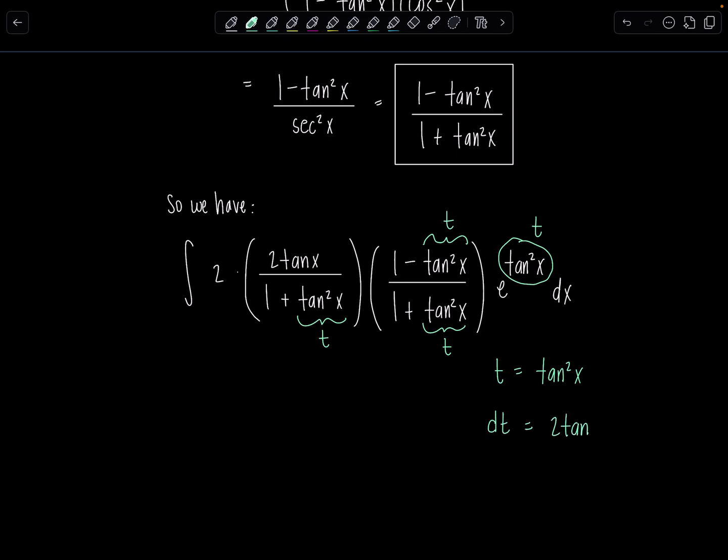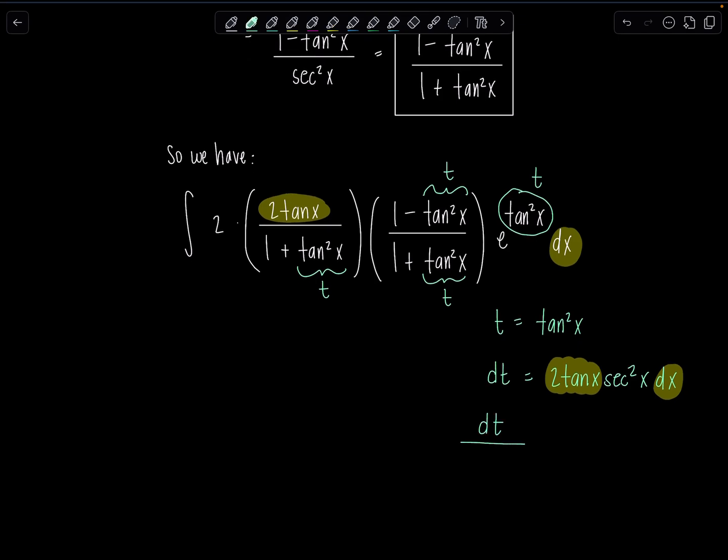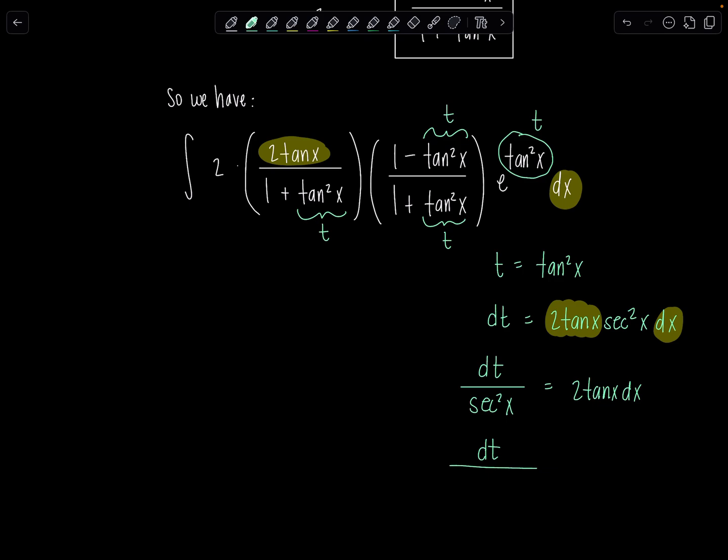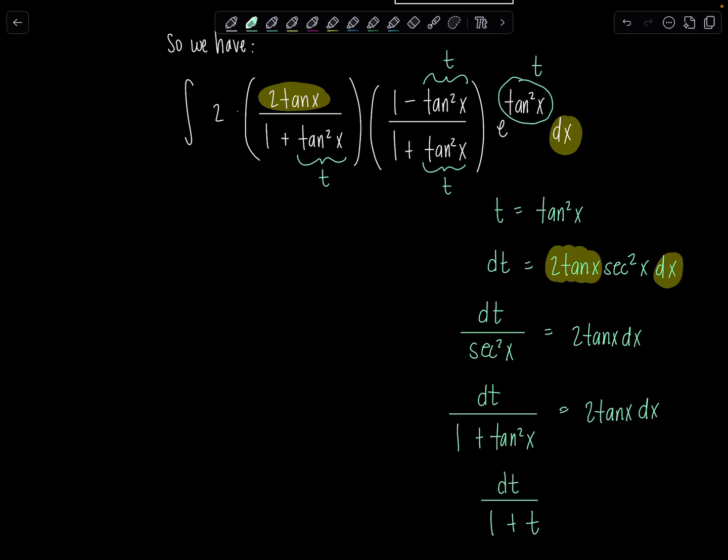Let me write it all in terms of the tangents and stuff. So 2, instead of sine 2x, I'm going to put 2 tan x over 1 plus tan squared x. And then instead of cosine 2x, we have 1 minus tan squared x over 1 plus tan squared x. And then we still have that e to the tan squared x dx sitting there. Good? Okay, so this was sine 2x. This was cosine 2x. Now let's revisit the substitution that we're making. t is going to be tan squared x. So then this is going to be t. This is t. This is t. This is t. Dt. Do you remember what dt was? 2 tan x secant squared x dx.